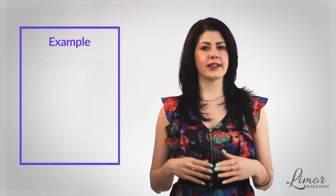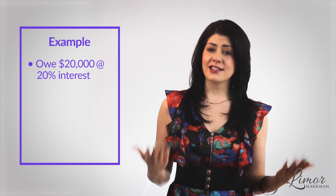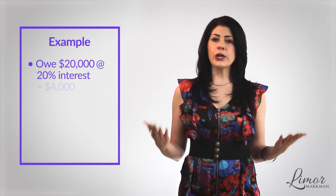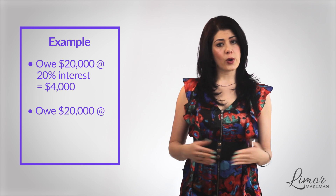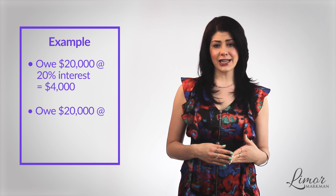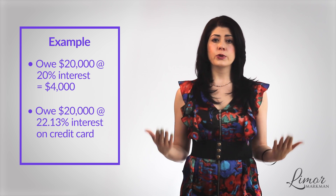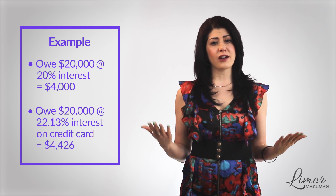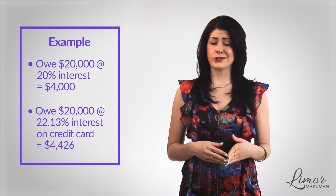Let's say that you owe $20,000 with 20% APR — remember, that's the same as the nominal interest rate. You would pay $4,000 in interest a year. But if you owed the same $20,000 on a credit card that compounded daily, your effective interest rate would be 22.13%, which would mean that you would have to pay $4,426. That's an extra $426 in interest. This is why you can have the same interest rate on different products and be charged different amounts.